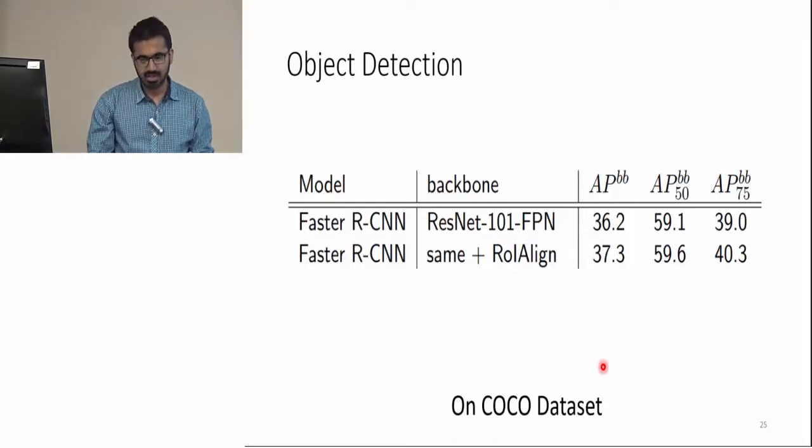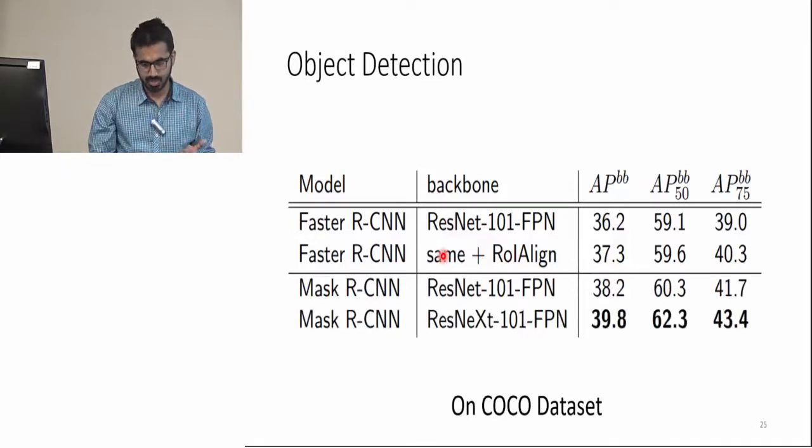These are the results for object detection. For that, they have compared only with Faster R-CNN, and you can see that Mask R-CNN also does a better job at object detection.